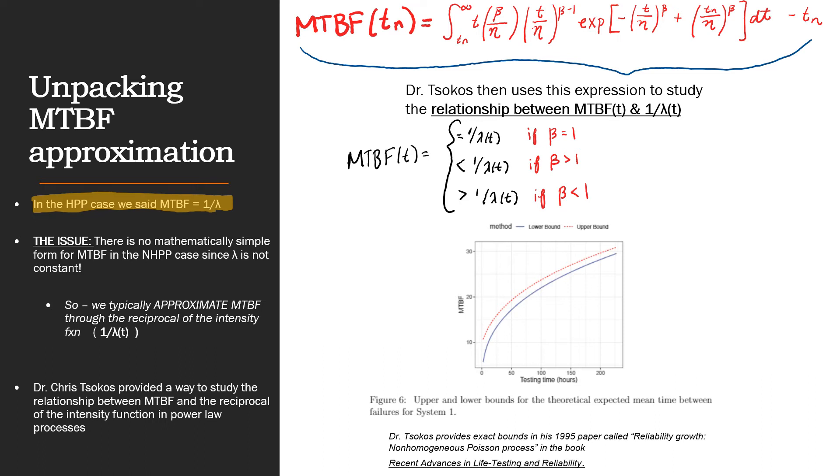Unlike the HPP, for a NHPP, there is generally no mathematically convenient form for MTBF. What is commonly done in DOD reliability growth modeling is to use 1 over the intensity function as an approximation of the MTBF. This relationship is exact for the HPP. And for the power law process, we can examine how the approximation works.